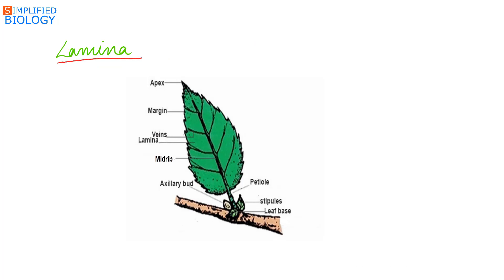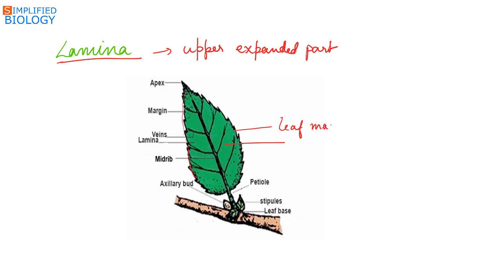Lamina or the leaf blade is the upper expanded part of the leaf. It is of various shapes and sizes. The leaf margin differs in different leaves. Present in the lamina are veins and veinlets, which provide rigidity to the leaf. They also help in transport of water, minerals and food, as vascular bundles — that is xylem and phloem — are found present in the veins.